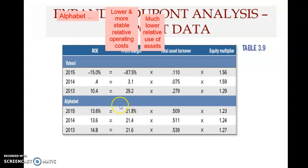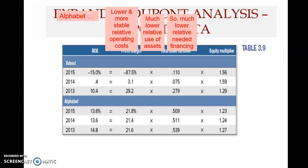By comparing total asset turnover, we can infer how efficiently these companies use assets. Because Alphabet uses relatively fewer assets, it also needs less financing, since assets equal liabilities plus equity. Relative to sales, Alphabet's financing needs are much lower than Yahoo's.